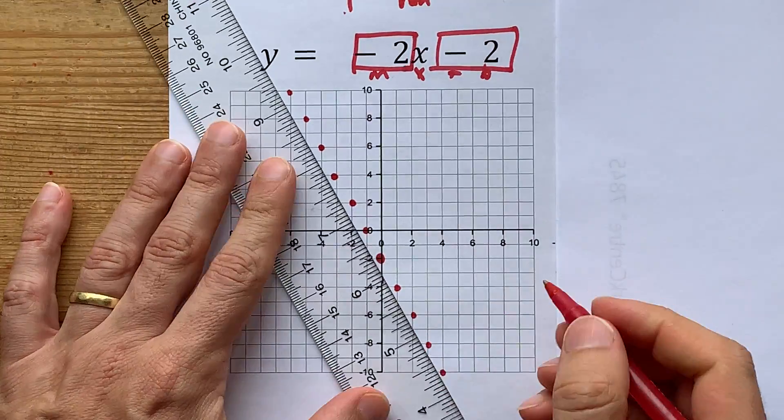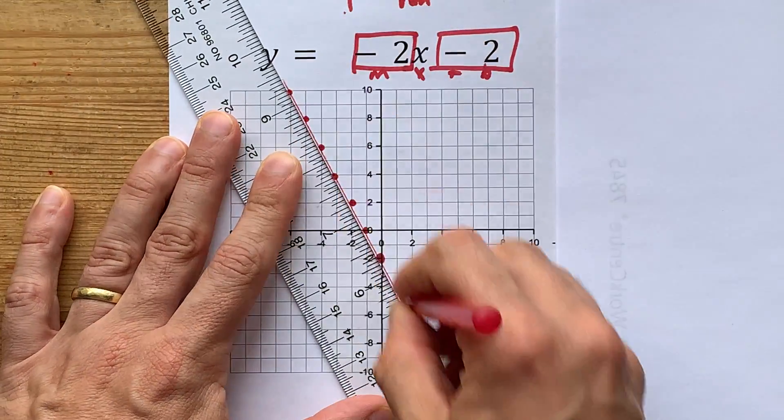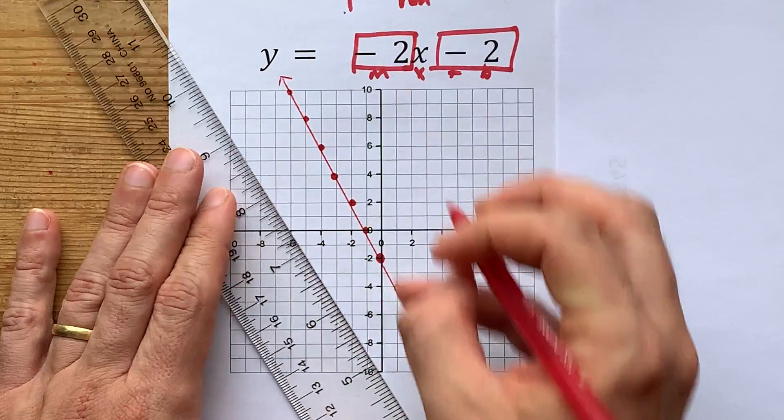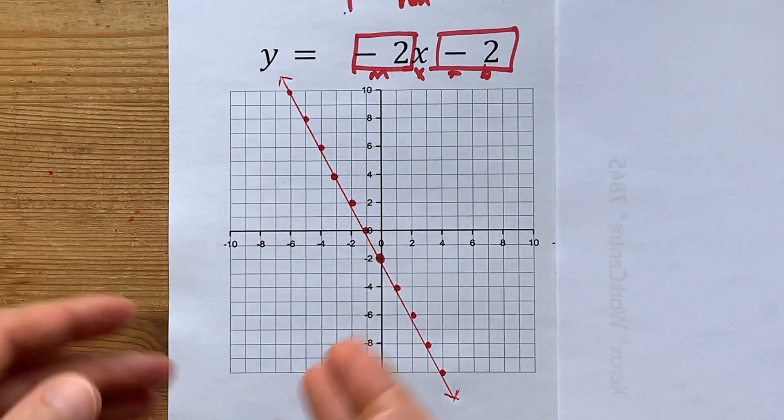Then, take a ruler, connect those lines, put an arrow on both sides, because that's what makes it a line, and you're done.